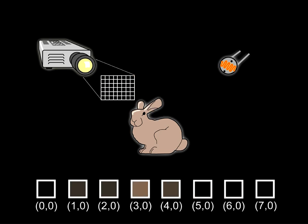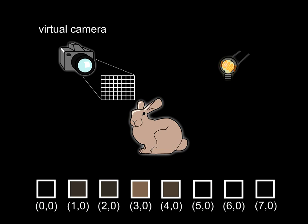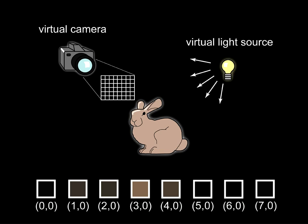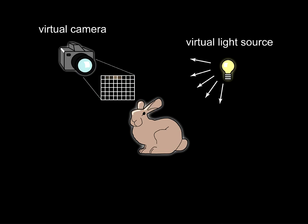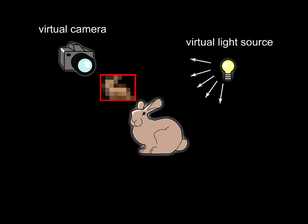Helmholtz reciprocity specifies that the light transport will be the same along a light path, regardless of the direction of the flow of light. This means that the same value would be measured whether the light starts off at the projector pixel and goes to the photosensor, or if it starts from the photosensor and arrives at that projector pixel. The transfer of energy from one to the other will be the same in either direction. Thus we can transform our projector into a virtual camera and the photosensor into a virtual light source. By putting back the measured values into the correct positions of the camera image array, we can form the picture that would have been taken by the virtual camera. The resolution of this image will be that of the projector.